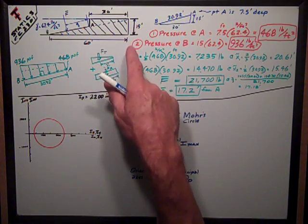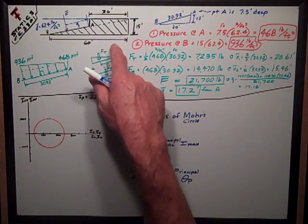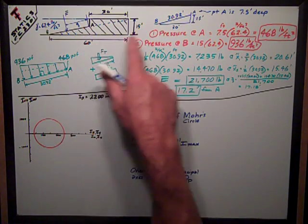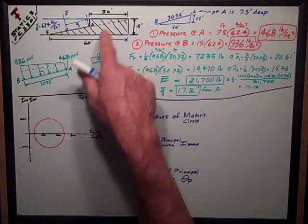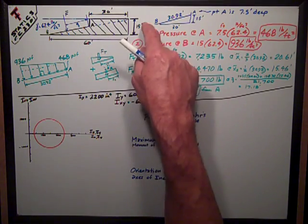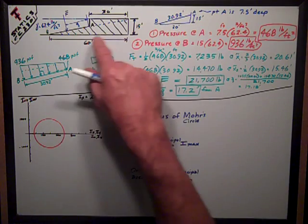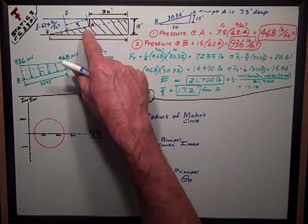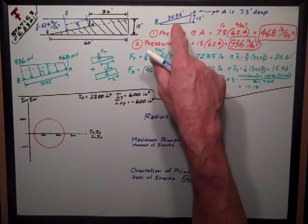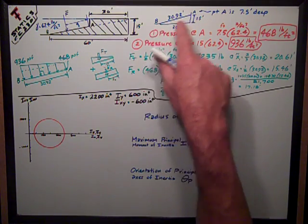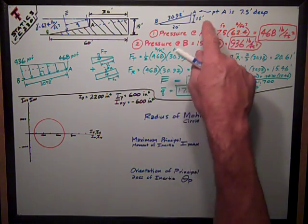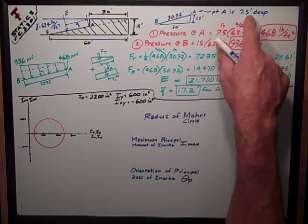We're counting on similar triangles, which I've drawn a little piece of over here. If it's 30 feet there and 60 feet there, that means that part's 30 feet. 15 feet height means the point from the bottom to point A is 7.5 feet, so the length from A to B is 30.92 feet, and point A is 7.5 feet deep.